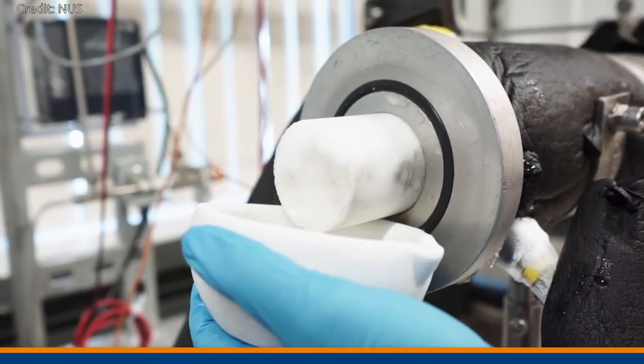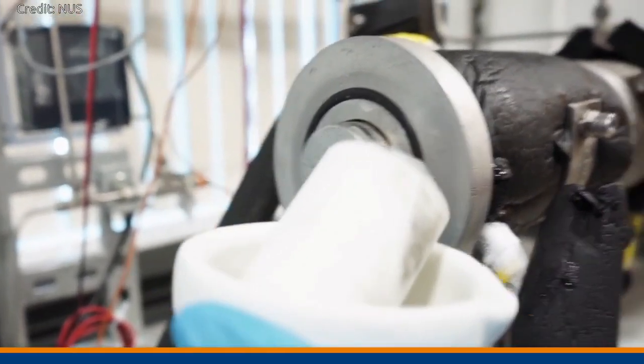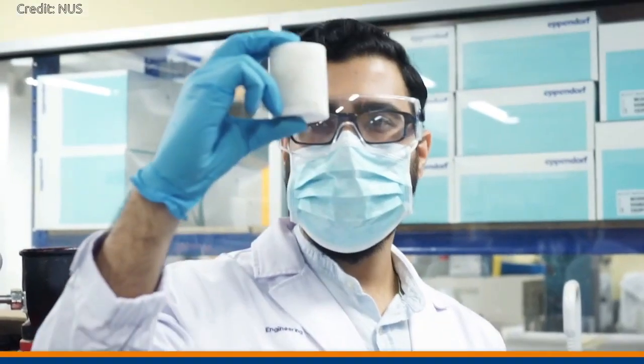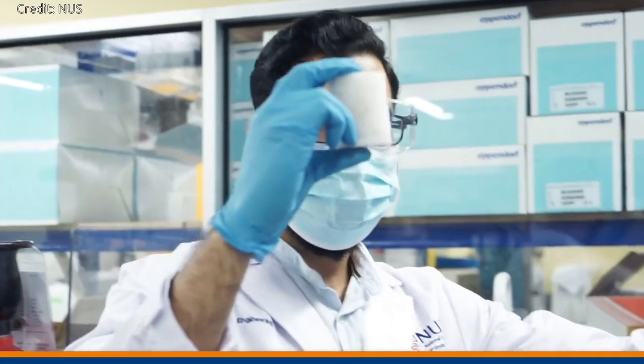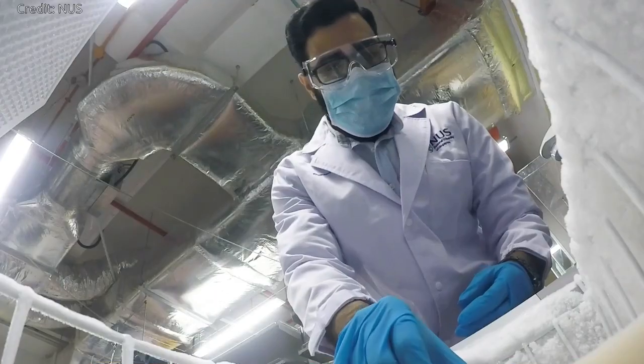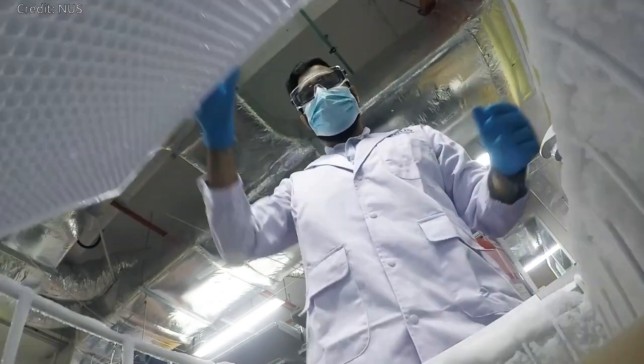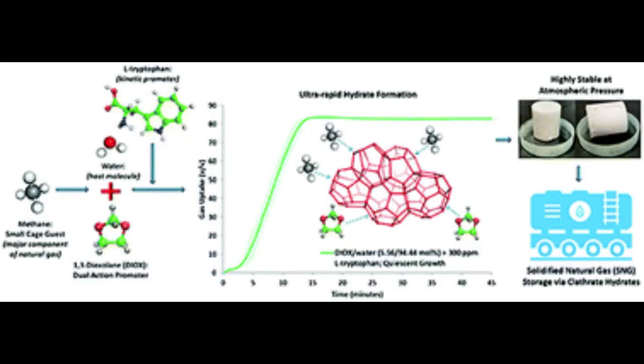The new additive mixer formulated by the NUS researchers contains L-tryptophan, well known as an essential amino acid in people's diet. This muscle-building amino acid can also greatly speed up the caging of natural gas into solid hydrate. The NUS formulation produces the fastest reaction rate to date, more than twice as fast as existing standards, while being less toxic and safer to handle.